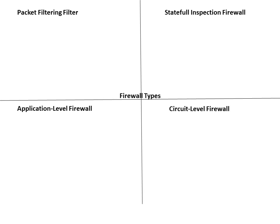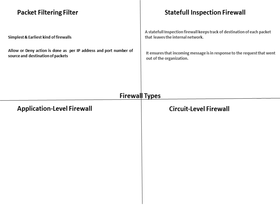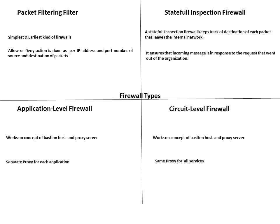There are four types of firewall. First, packet filtering firewalls — the simplest and earliest kind — allow or deny action based on the IP address and port number of the source and destination. Second, stateful inspection firewalls inspect communication between internal and external networks and allow only messages that are in response to requests from the internal network. Third and fourth, application level and circuit level firewalls both work on the concept of bastion host and proxy server. The difference is that in application level, a separate proxy exists for each application, whereas in circuit level, the same proxy handles all services.